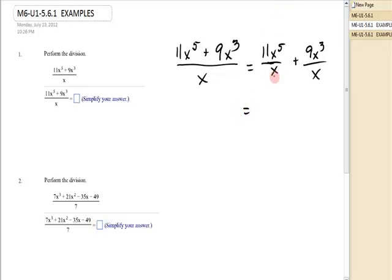Now, each one of those can be simplified using the quotient rule. Remember that that particular denominator of x is really x to the 1st. So the first term will become 11x to the 5 minus 1 is 4 plus 9x to the 3 minus 1, which is 2. And that's my quotient. And that's why I said we needed to review the quotient rule.